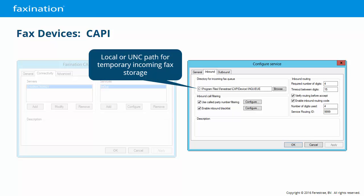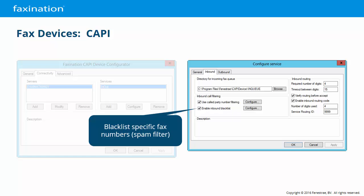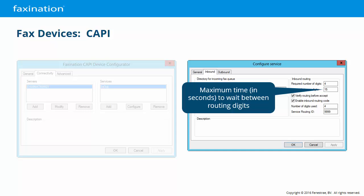On the Inbound tab, first we can set the path to use for temporary storage as inbound faxes are being processed. Called Party Number Filtering refers to the number that was dialed to send the incoming fax. You can configure explicit numbers or ranges of numbers — when enabled, inbound calls to numbers not configured here will be rejected, even if they are legitimate fax numbers you own. You can also configure an inbound blacklist based on the caller ID of the sending device, useful for identified spammers. Inbound routing digits are always expected with CAPI; here you set the number of routing digits to expect from the telephony system, and the maximum time to wait between any two routing digits.